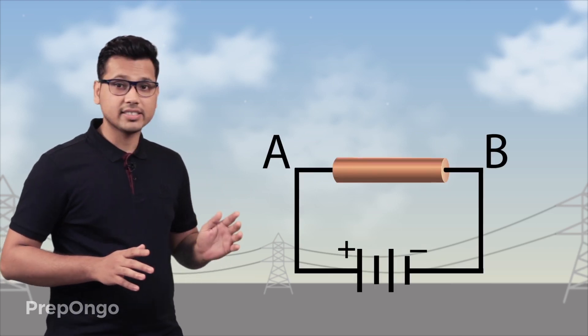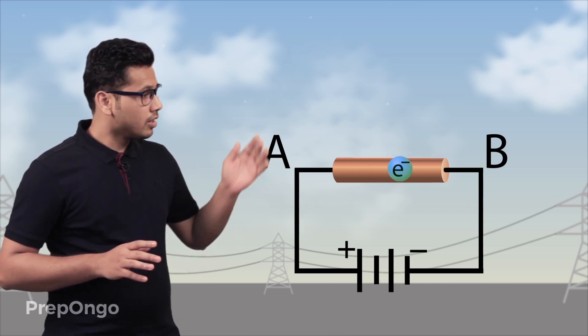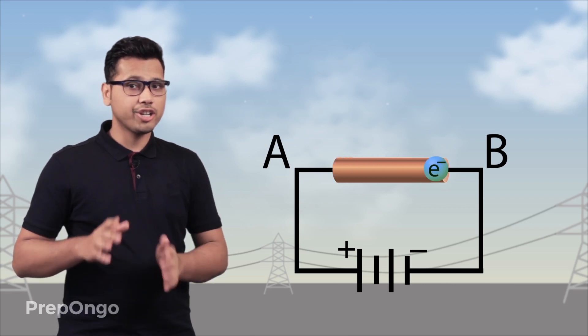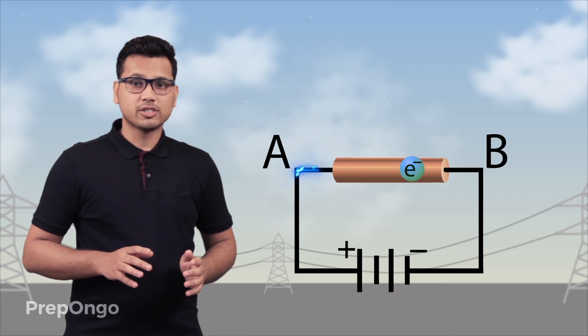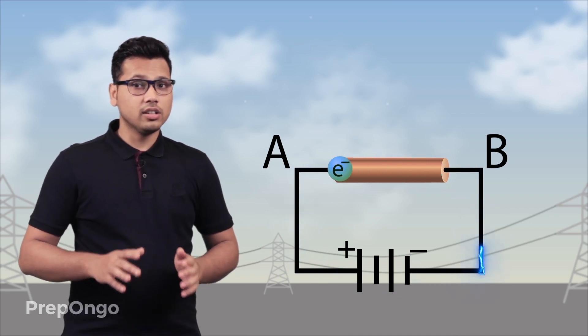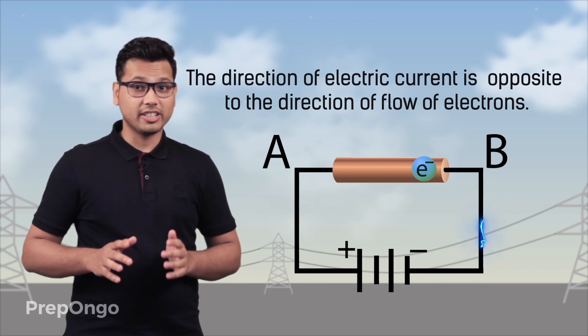But later on, when subatomic particles were discovered, it was found that the current was not due to positively charged particles but due to the flow of electrons. We know that electrons are negatively charged particles. So to keep the convention of current direction the same, it was decided that the direction of electric current is opposite to the direction of flow of electrons. If we look at the circuit again, the electrons will be flowing from B to A, so the direction of current will be from A to B. Thus, the direction of flow of current is opposite to the direction of flow of electrons.